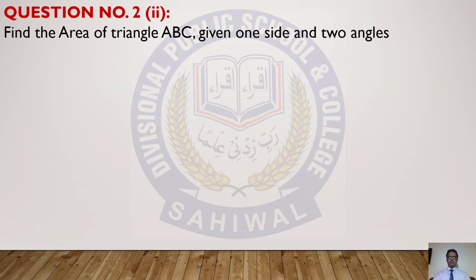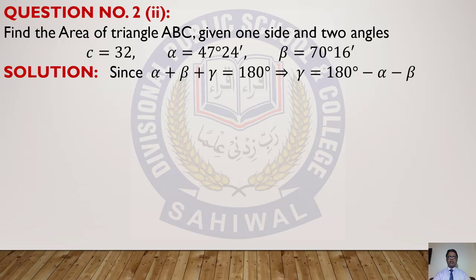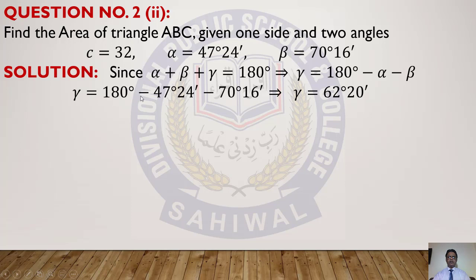Now we do Question 2, Part 2: find the area of triangle ABC given one side and two angles. c = 32, α = 47°24', and β = 70°16'. Two angles are given; we find the third angle using: sum of three angles of a triangle = 180°. So γ = 180° − α − β = 180° − 47°24' − 70°16' = 62°20'.